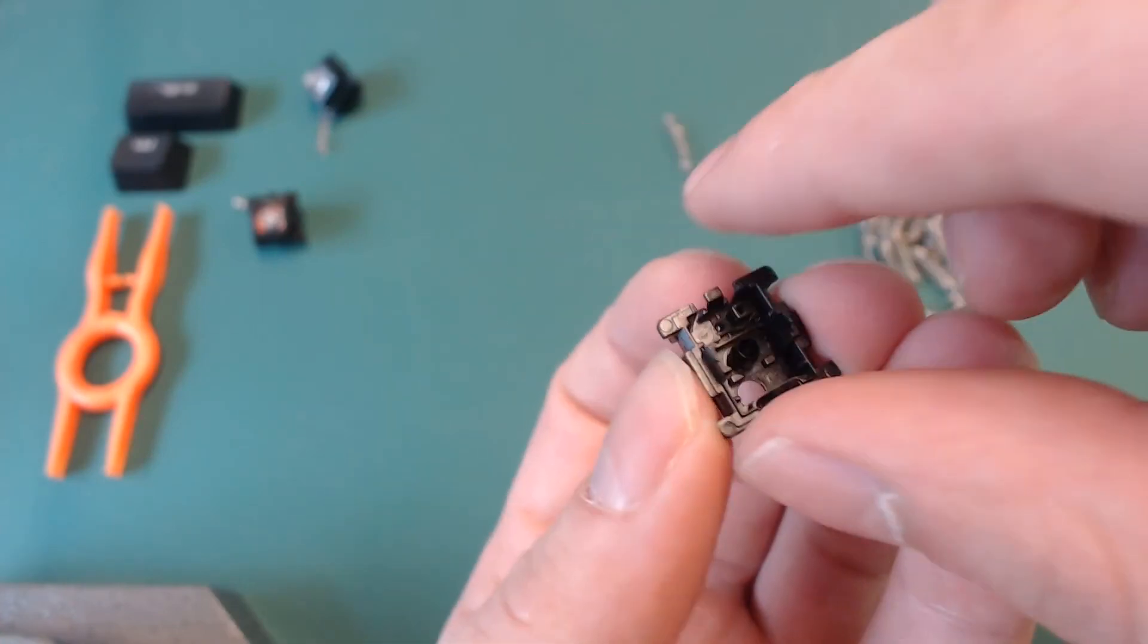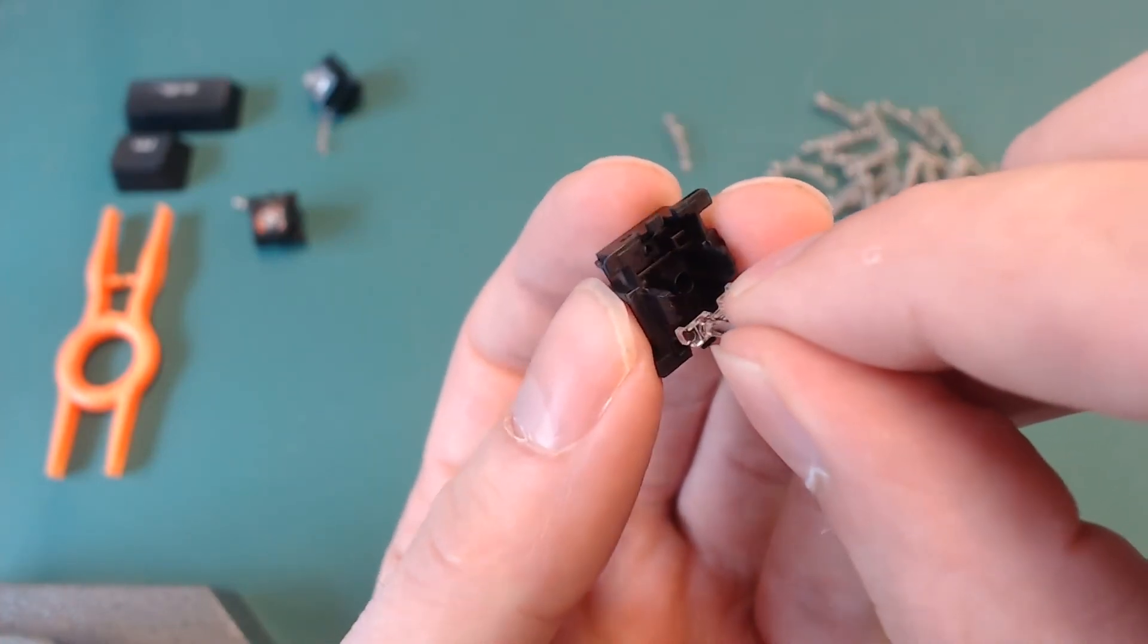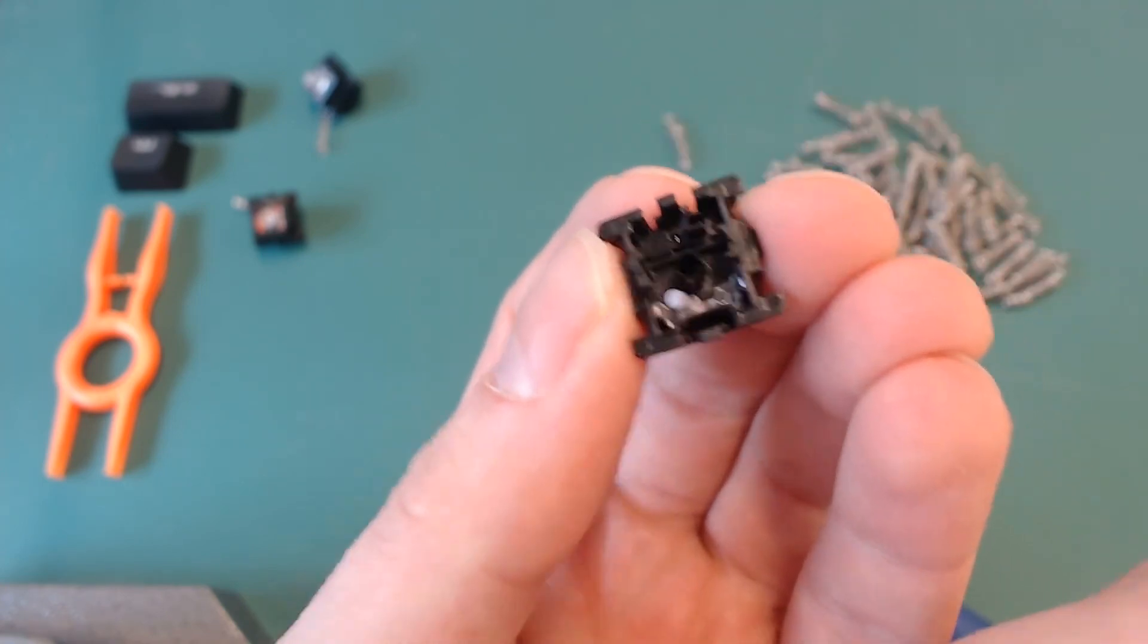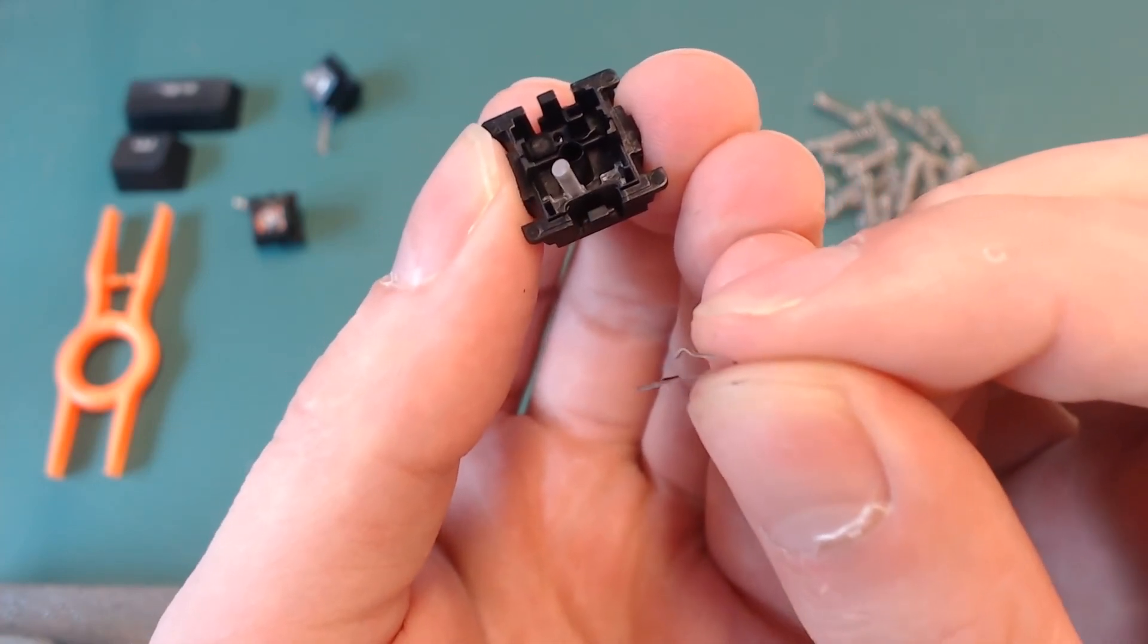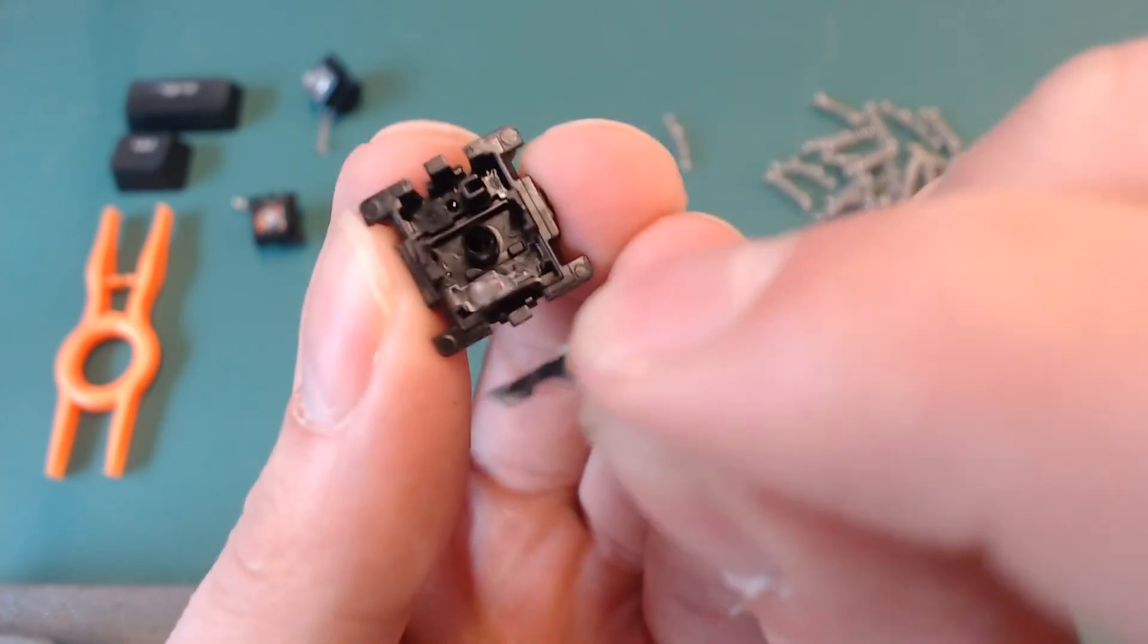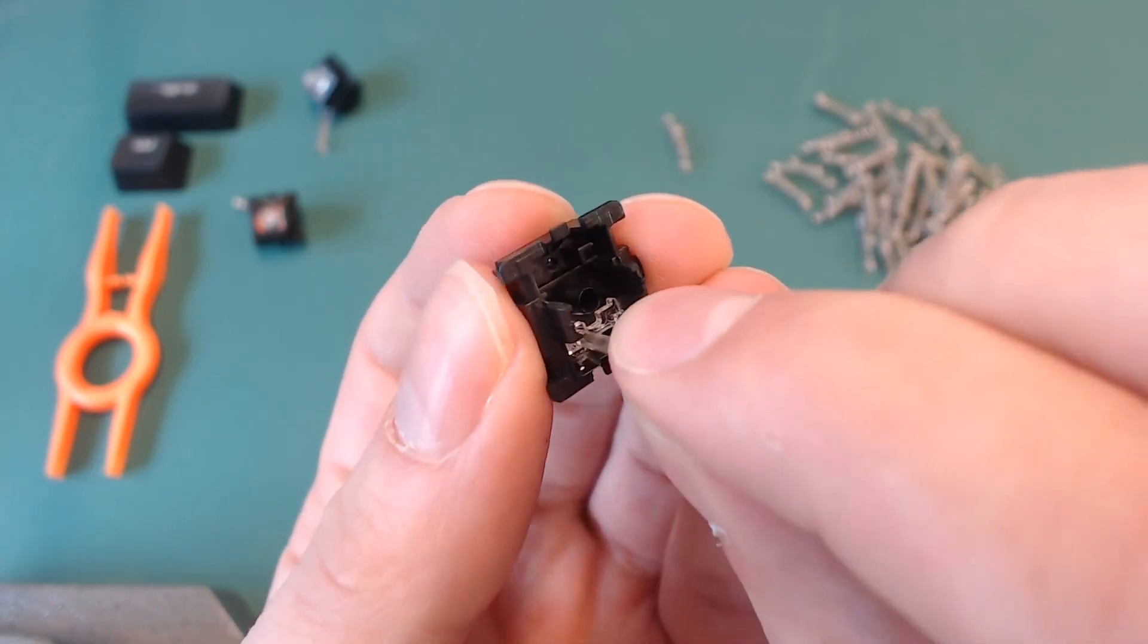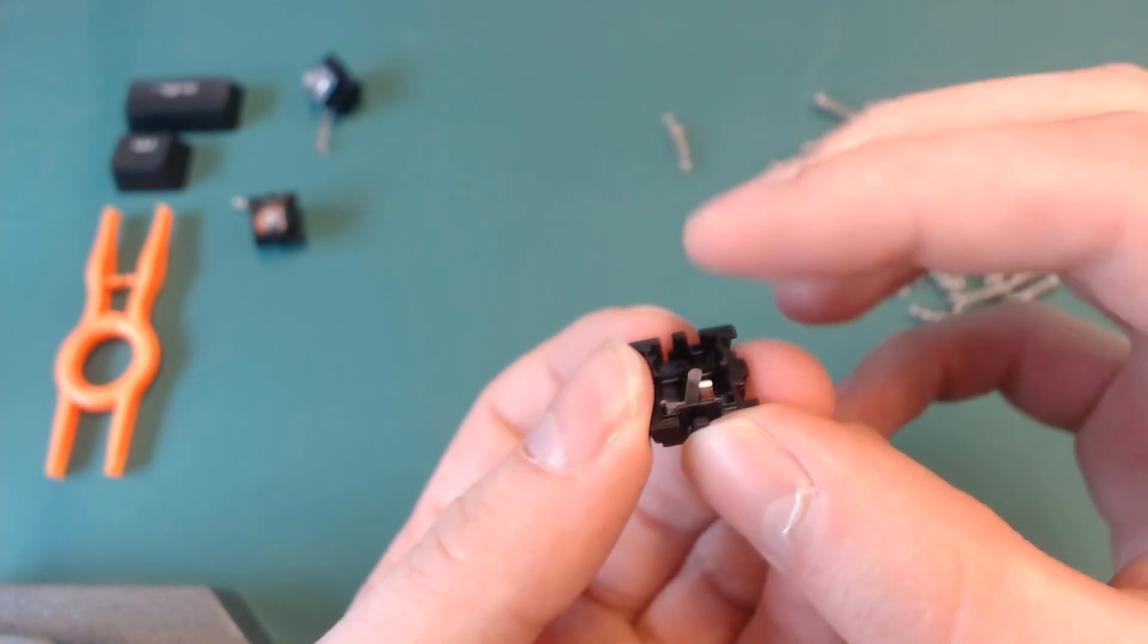First you insert the clear stem for the RGB light, the same as you would do with the red switches. Then, as you can see, the metal part has a thing that sticks out a little bit. That should go towards the inside and you should be able to slide it next to the clear RGB stem and it should fall in directly.